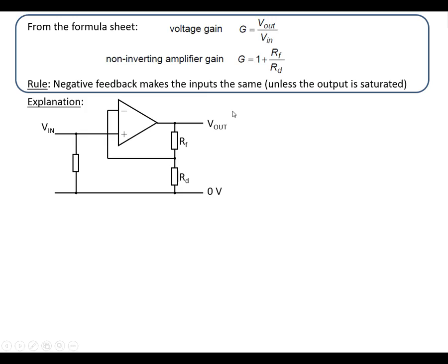Non-inverting amplifier. Here is the circuit for the non-inverting amplifier using an op-amp. These two resistors, RF and RD, are the ones which we're going to use to set the voltage gain of this amplifier. We've got the formula here: 1 plus RF over RD.